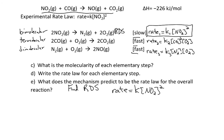If we found an intermediate in the rate law, we would need to apply the pre-equilibrium approximation. I do have another video with an example of that if you're interested. But in this case, there are no intermediates in the rate law, so we're done with this part.